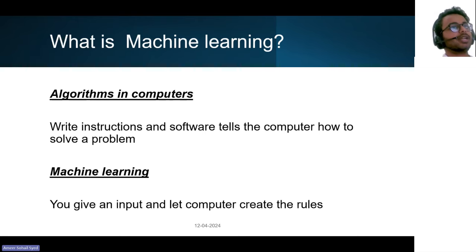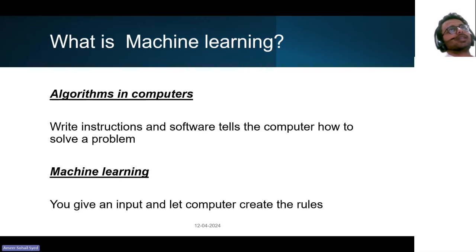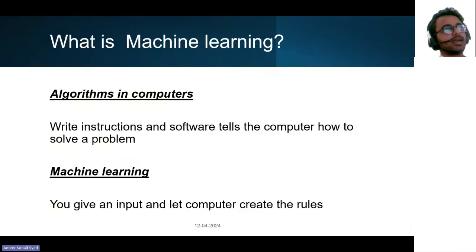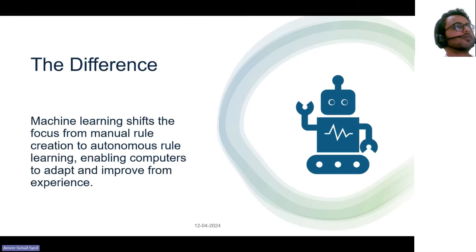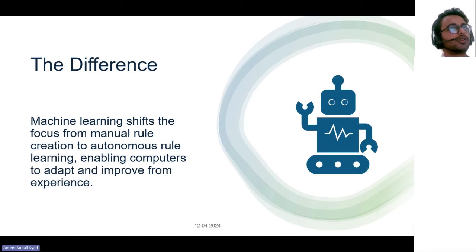Basically, computers already have a predefined set of software instructions — applications like Notepad, PowerPoint, or Excel that have instructions built in that you cannot modify. In regular computing, humans provide the set of instructions. In machine learning, it's slightly different — the computer creates its own rules based on some sort of inputs and outputs that you show it. The shift is that you don't want to write complex rules, but want computers to adapt and improve over time with experience.